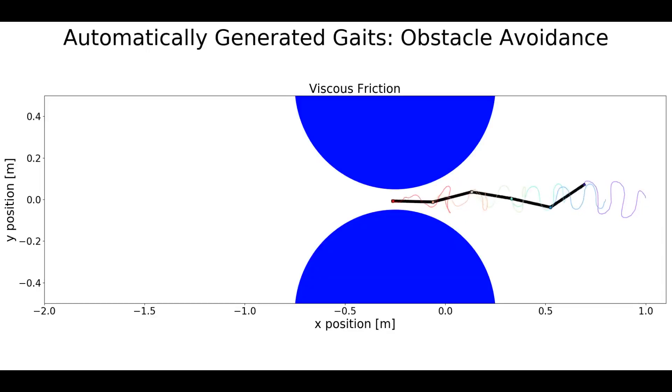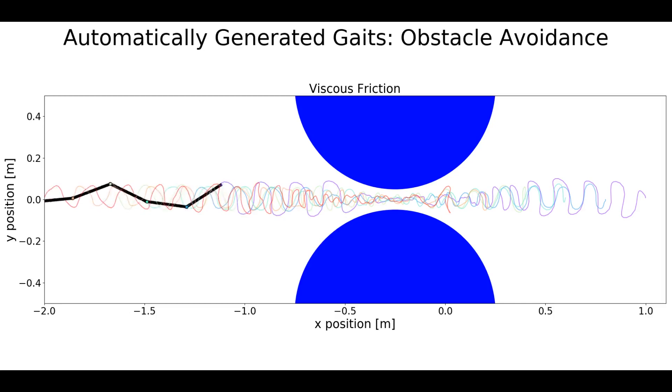Here is the gait to avoid obstacles and navigate through a narrow tunnel. Note how the amplitude of the gait is automatically reduced for the joints passing through the narrowest point, while the snake increases the amplitude of the gait for the links currently outside of the tunnel in order to propel itself forward.